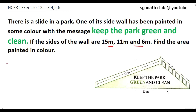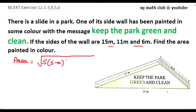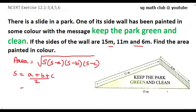We are going to use Heron's formula to find the area of this triangle. It is equal to the square root of s(s − a)(s − b)(s − c), where s is the semi-perimeter, that is (a + b + c) divided by 2. Here a is 11, b is 6, and c is 15 meters.